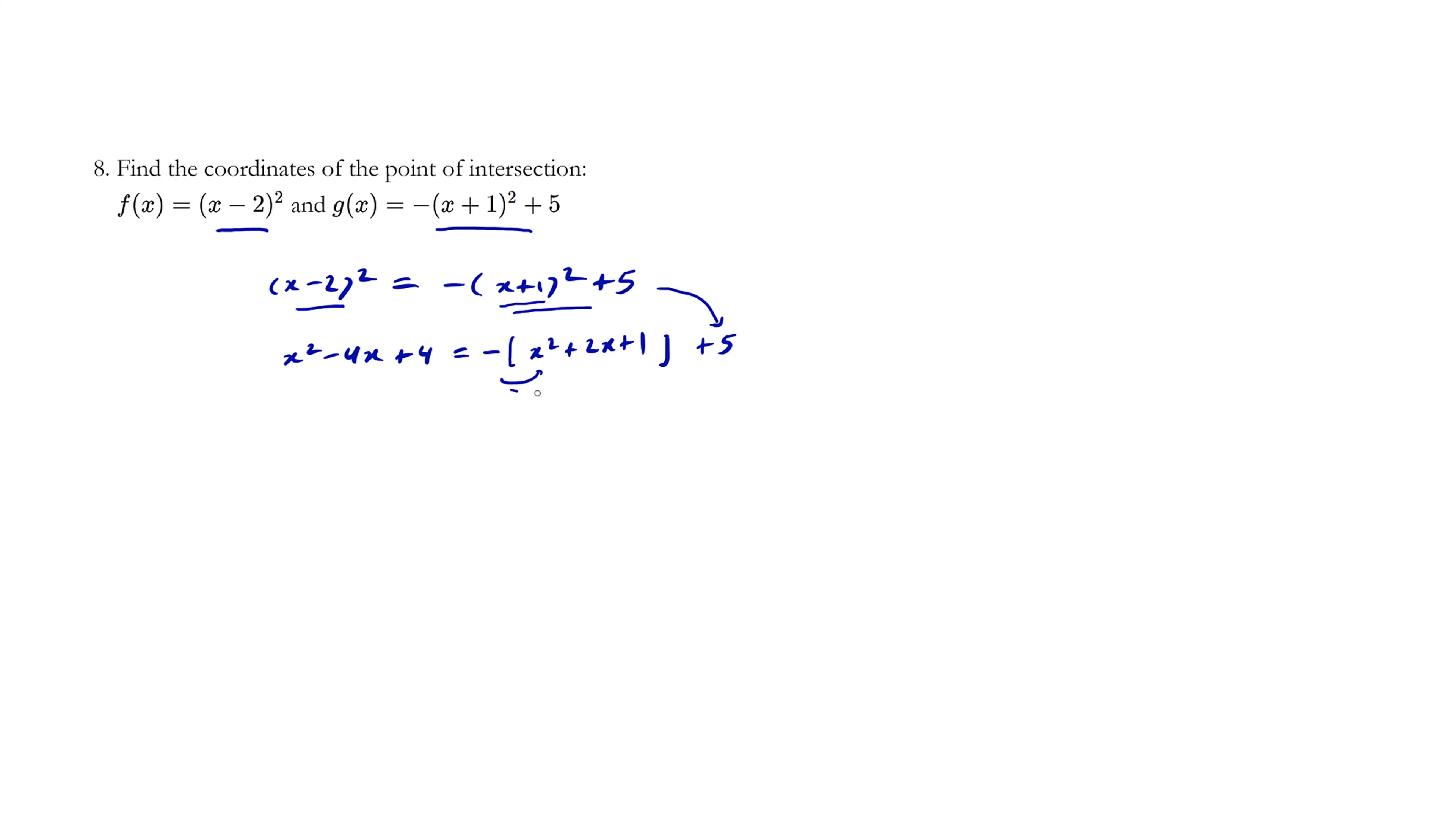We're going to toggle all the signs. We're going to flip the signs. We have x squared minus 4x plus 4 equals negative x squared minus 2x minus 1 plus 5.